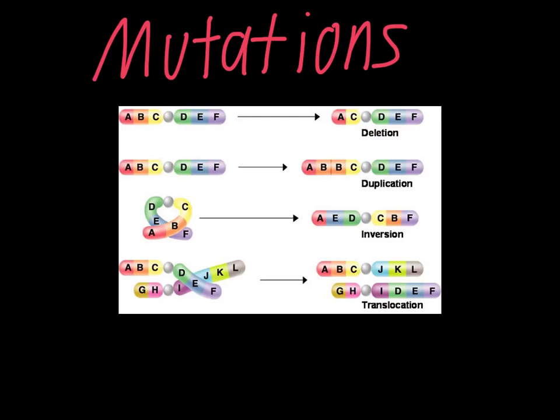The way we're going to practice some of this in class is actually using sentences to represent the section of the DNA, and we'll transcribe it into RNA. Then we'll show the kinds of problems that can happen when there is a deletion or a duplication, and how that can affect the kinds of proteins that are made from that section of DNA. For now, it's good enough just to know the four major categories. We'll work in more detail with those sentence examples in class starting tomorrow. Make sure you answer the questions when the video is over, and I'll see you in class.